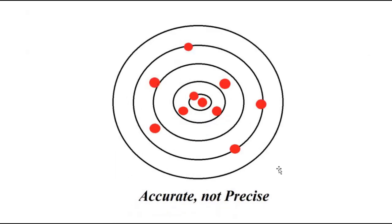Let us take another case. Here, the shots are scattered all over, but the shooter is able to hit the target every now and then — twice or thrice he has hit very close to it. So here he is somewhat accurate but not precise, because he is not consistent. This case is accurate but not precise: accurate because he is able to hit the target, but not precise because he is not consistent in hitting the same spot.